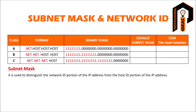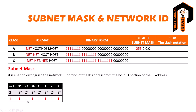Subnet Mask. A subnet mask is used to distinguish the network ID portion of the IP address from the host ID portion of the IP address, because every machine must know the network ID to work properly in a network. The default subnet mask of an unsubneted Class A, B, or C network has 1s for each bit used for the network ID or subnet ID, and zeros for the host ID bits. So if we turn on all the network bits and turn off all the host bits, we get the default subnet mask.